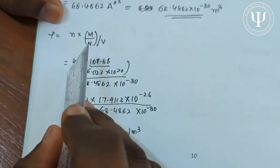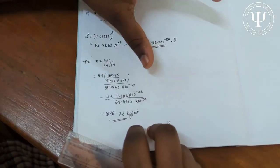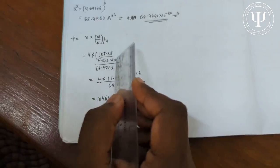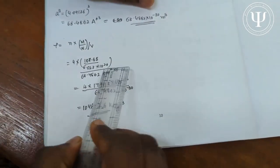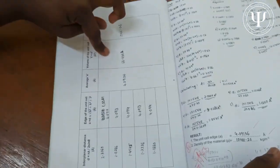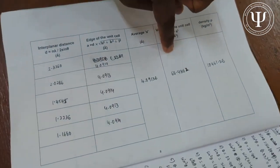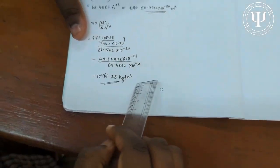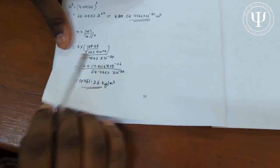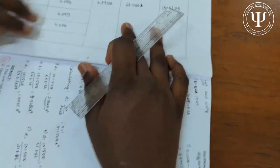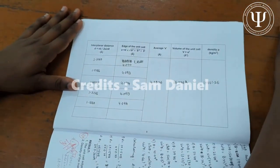To find density, use ρ = nM / (N_A × V), where n = 4 for an FCC lattice (silver follows FCC), M = 107.88 (atomic mass of silver), and N_A = 6.023 × 10²⁶. Convert the volume to meter cubed (multiply by 10⁻³⁰). Calculating this gives the density of silver as approximately 1.046 × 10⁴ kg per meter cubed. The experiment is simple — you just have to take the measurements properly.